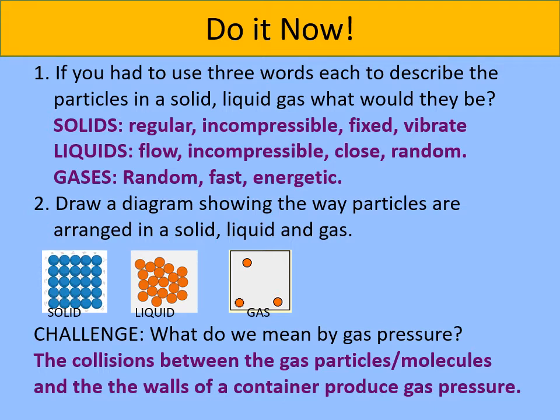The more often the particles are hitting the container, the faster they are moving. If that is the case then we say these particles have a higher pressure the faster they travel. This is why, for example, if you look at a tire or a balloon, the pressure goes up when we pump or blow more air particles inside those containers.